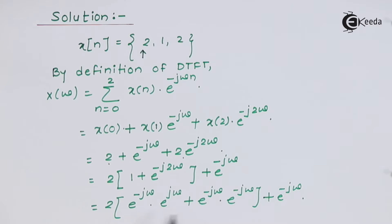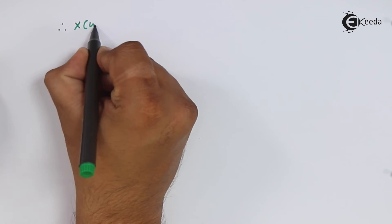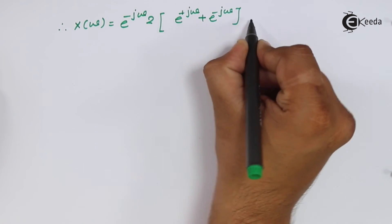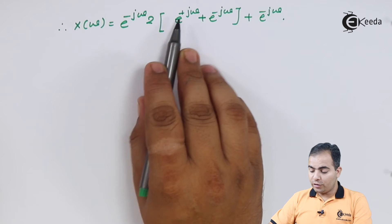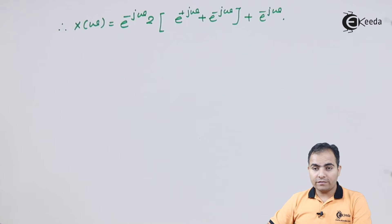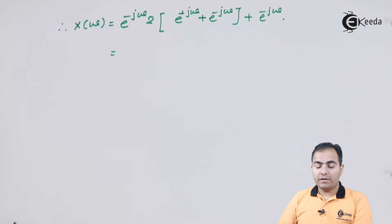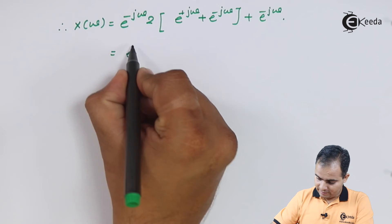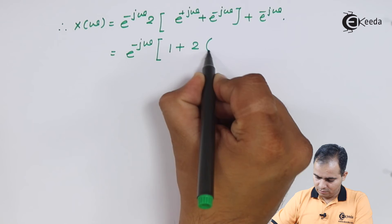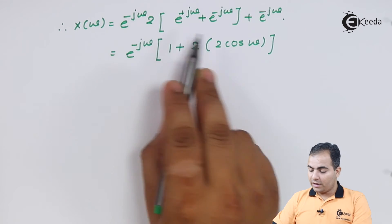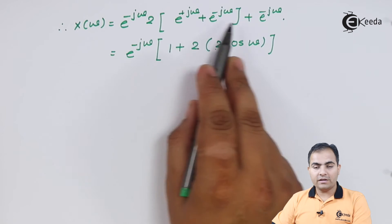From this bracket I'll take e to the power minus j omega common. Using Euler's formula, e to the power j theta plus e to the power minus j theta equals 2 cos theta. Taking e to the power minus j omega common from both sides gives us 2 cos omega, which is the standard formula.